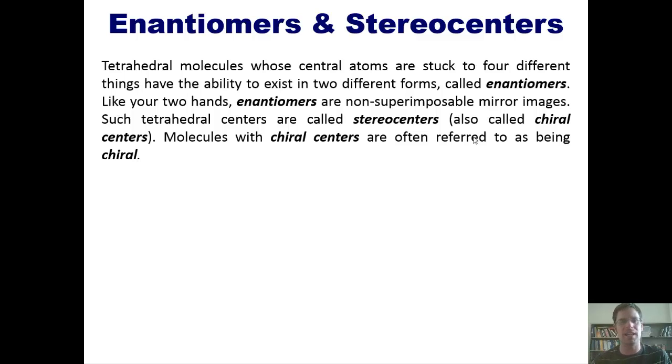If you have any molecule that contains a carbon that's bonded to four different appendages around it in a tetrahedral geometry, you have a molecule that can exist as potentially one of two enantiomers, two non-superimposable mirror images. Such tetrahedral centers found within those molecules are called stereocenters and are sometimes also called chiral centers or chirality centers. Molecules that have chiral centers are often referred to as being chiral.